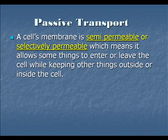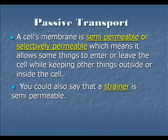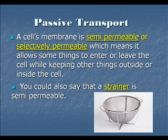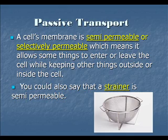A cell membrane is a semi-permeable or selectively permeable membrane, which simply means it allows some things to enter the cell while keeping other things out. A good example of something like a semi-permeable membrane would be a kitchen strainer. When you cook pasta, you boil it in water and then dump it into a strainer — the water easily passes through while the pasta does not. So it's semi-permeable: some things go through, some things do not, just like a cell membrane.